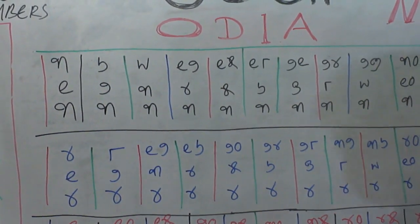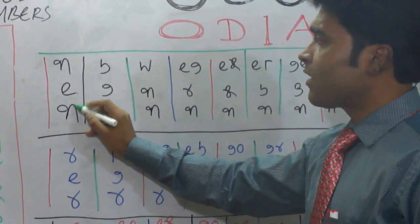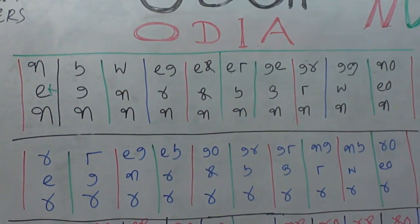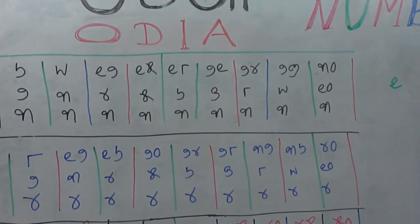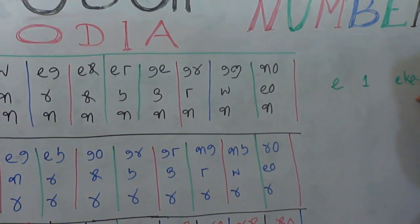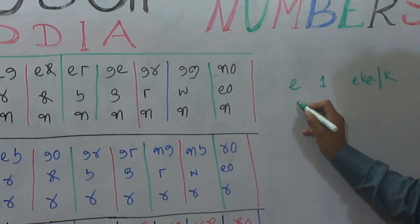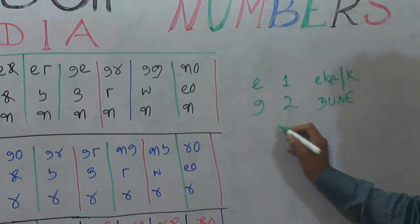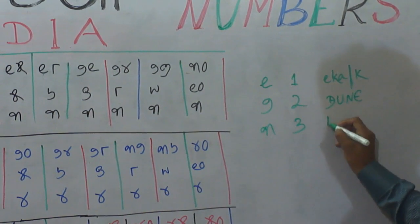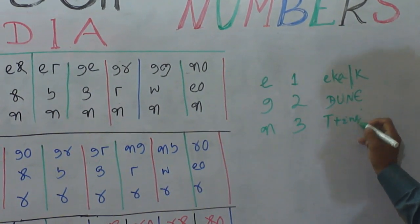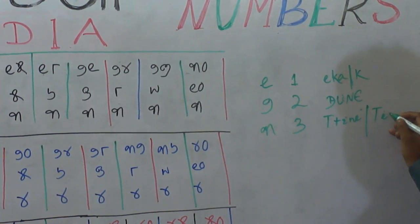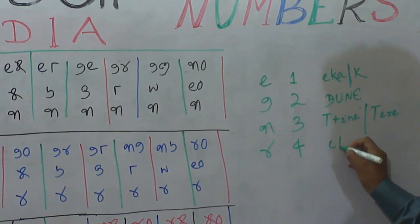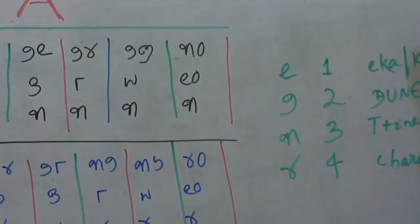This one is known as 'ke tini ke'. You see: 'eka' means one, we call it 'eka' or 'ke'. This is 'dui' meaning two, we say 'dunne'. This is three, we call it 'tini'. This is four, that is 'chari' or 'chou'.